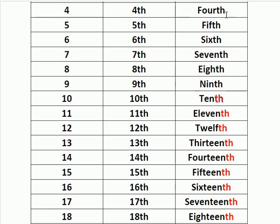To write the ordinal number name, first you should write the number name of the given number. For 4, you write f-o-u-r, then add 'th' to the end to get the ordinal number name. The ordinal number name also follows the same pattern — add 'th' to the end. For all the number names you can see 'th' at the end. There is only a difference in the spellings.